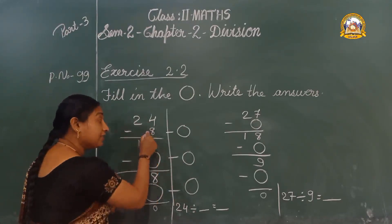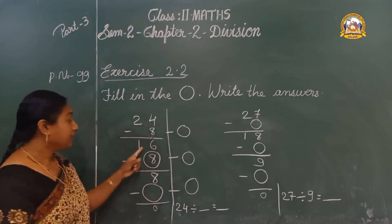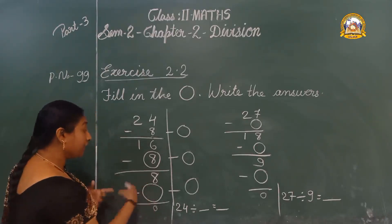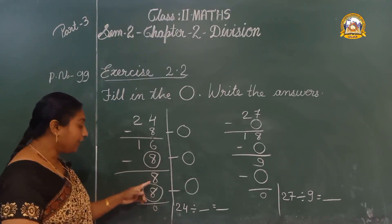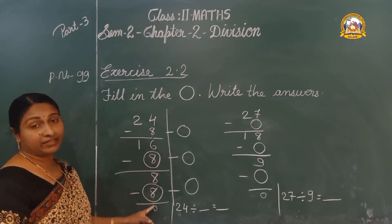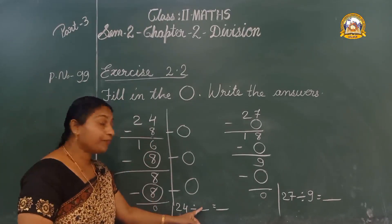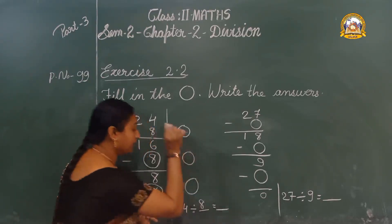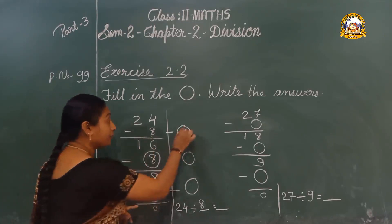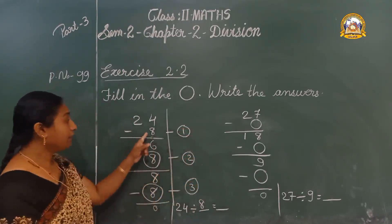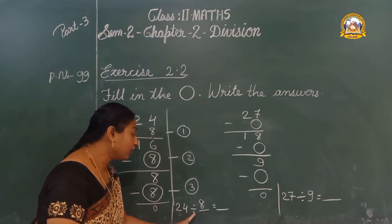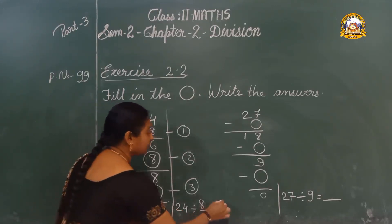So 24 minus 8 is 16. Again, same number: minus 8. 16 minus 8 — what is the answer? 8. Again, minus 8: 8 minus 8 equals 0. So here, what do we write? 24 divided by 8. We subtracted 8 a total of 1, 2, 3 times. So 24 divided by 8 is 3.